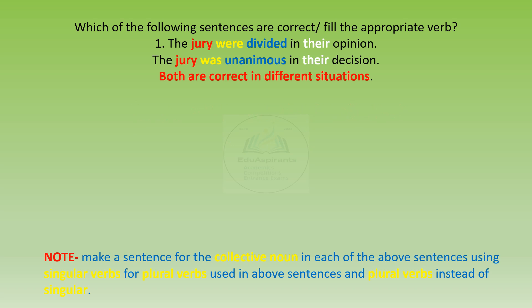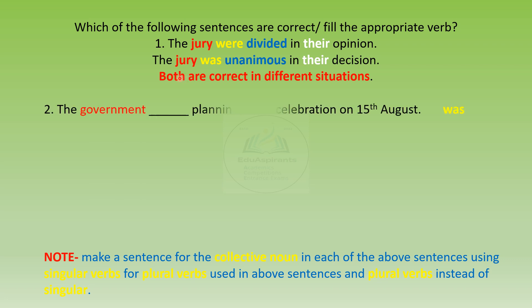Let us now see the answers. We saw the first sentence — the jury were divided, and the jury was unanimous. Both sentences are correct as per situation. The government was planning a gala celebration.